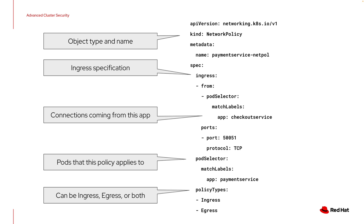This is what a network policy object in Kubernetes looks like. It has an object type of network policy and we have to give it a name. The ingress specification in this example tells us that we want to allow connections coming from an app called Checkout Service on particular ports and protocols, and the policy is going to apply to an app called Payment Service. Network policies can restrict ingress or egress or both, but they're additive. Multiple policies apply rules additively, and they're deny-all by default — meaning if I don't specify a particular port, protocol, and source matching rule, I'll be denying all of those connections by default.